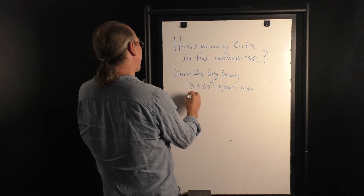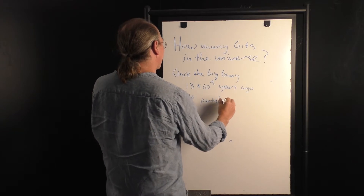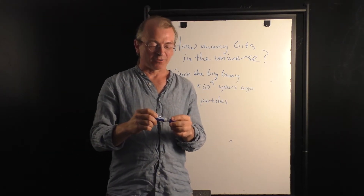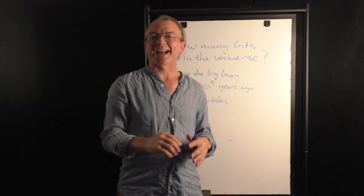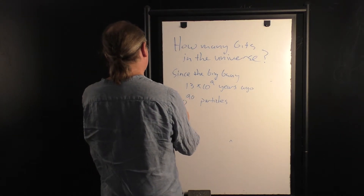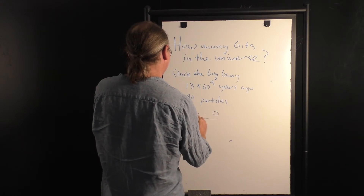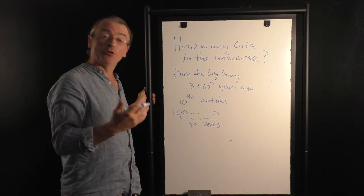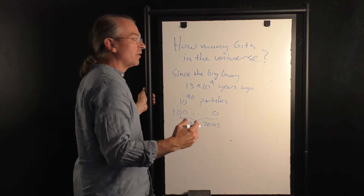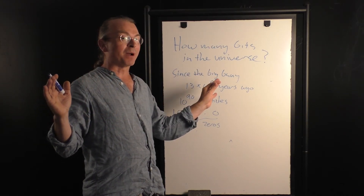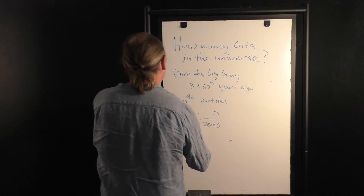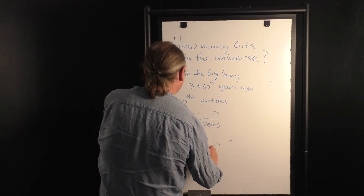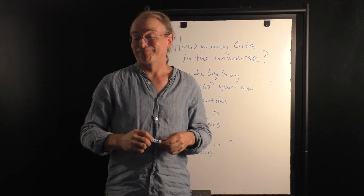It turns out that within the universe there are 10 to the 90 particles. Most of these are microwave photons from the blackbody radiation left over from the Big Bang. They're all over the place — they're around us right now. They're particles of light, and the wavelength is roughly about that size. There are 10 to the 90 of them — that's a 1 followed by 90 zeros in ordinary digital notation. Each of these particles carries a few bits of information. And if you go to the absolute limits allowed by the laws of physics, the total number of bits allowed would be 10 to the 120 — a 1 followed by 120 zeros.